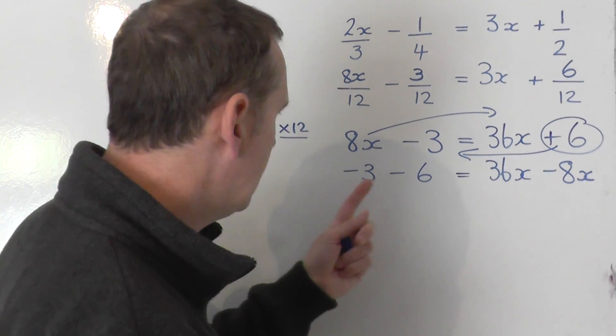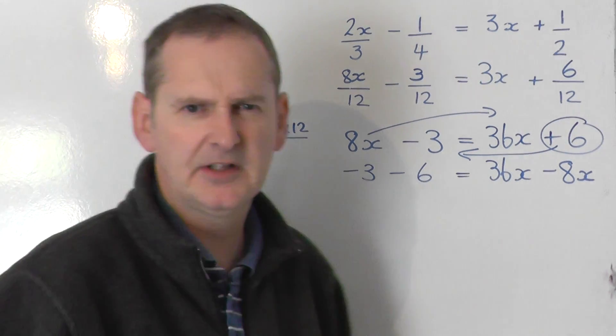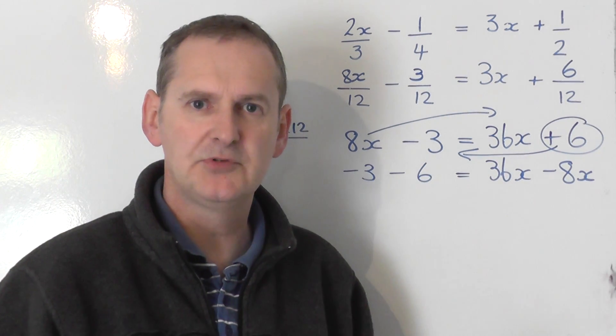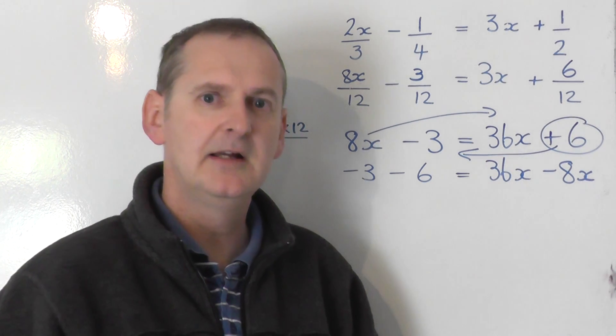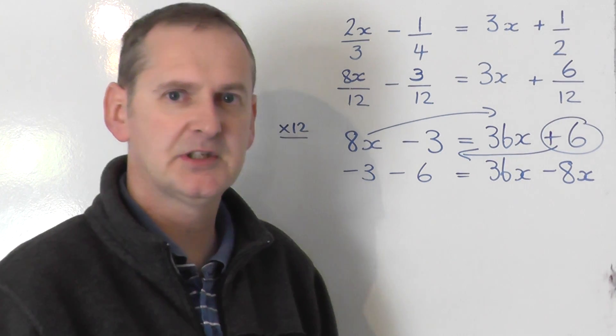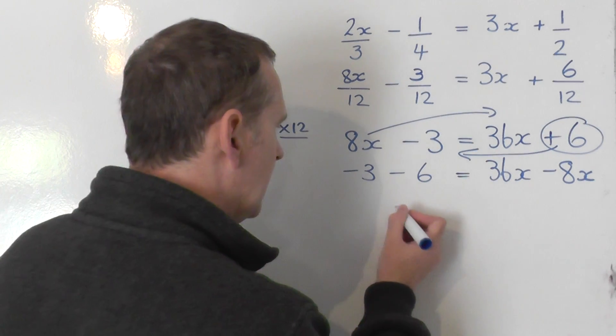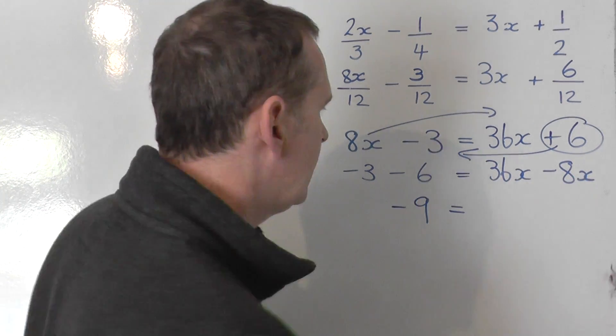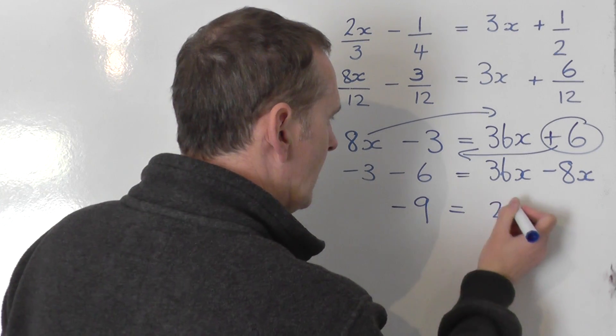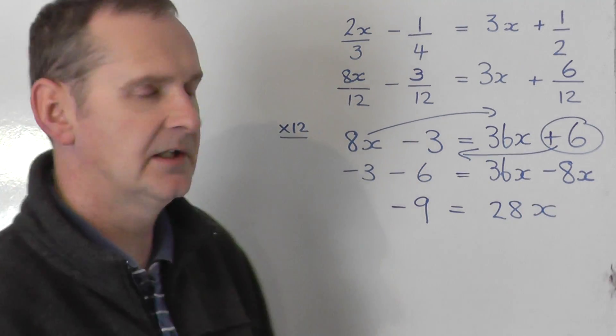Let's tidy up. A minus 3 with a minus 6. Don't think that two minuses make a plus. They don't. Not in this particular case. They do when you multiply them, but not here. Minus 3 meets minus 6, or a number line if you like. You get negative 9. And then 36x's take away 8x's. You're going to get 28x's on the right-hand side.